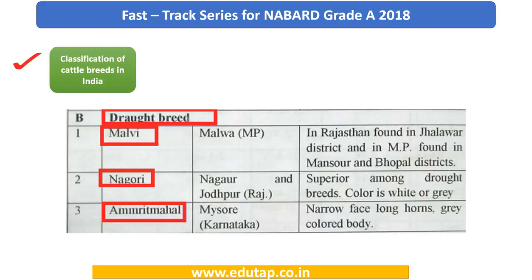Next we have the drought breeds: Malvi, Nagori and Amrit Mahal. You can see the native states and some important features. We can give you directions as to what things are relevant and important, but you need to sit down, pause the video, and make sure that you memorize them, because there is no point in just explaining these things — you need to internalize them.